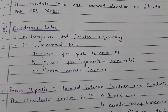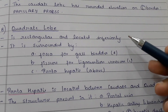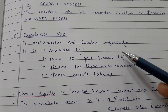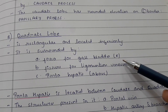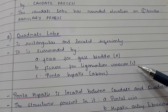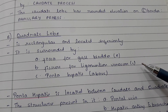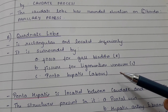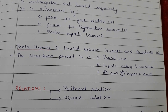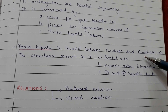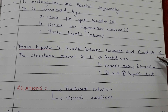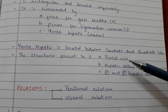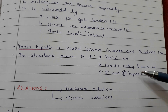The quadrate lobe is rectangular and located inferiorly. It is surrounded by the fossa for the gallbladder on the right side, fissure for the ligamentum teres on the left side, and the porta hepatis above. The porta hepatis is located between the caudate and quadrate lobes; the structures present in it are the portal vein, hepatic artery, and branches of the left and right hepatic duct.